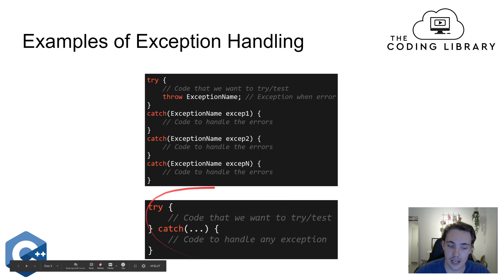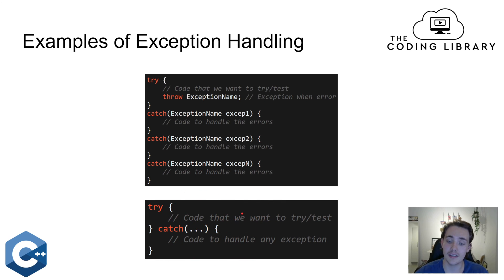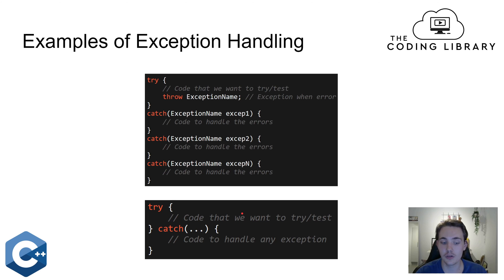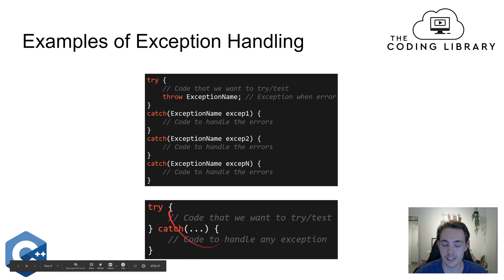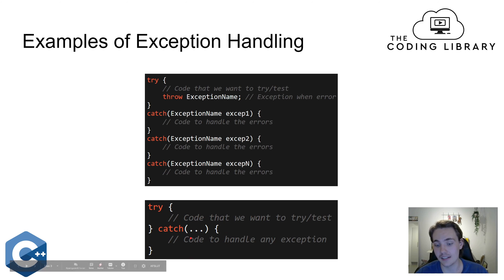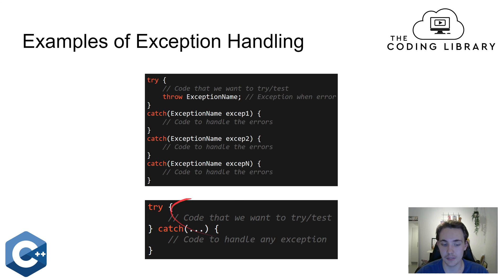We can also have simpler exception handling where we try out a block of code, and if any exception is thrown, it will just go down to this catch statement here. This catch-all handler can handle any exceptions that are thrown in our try statement.